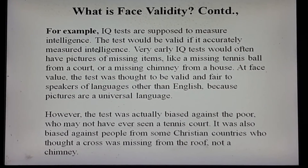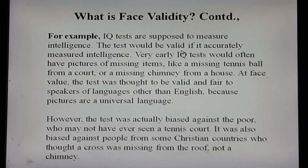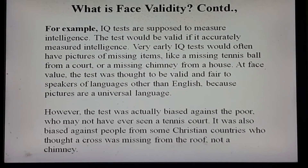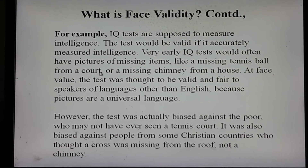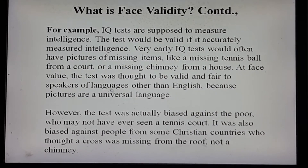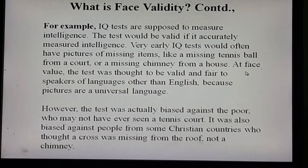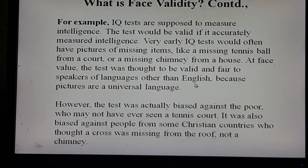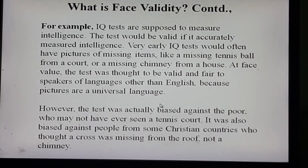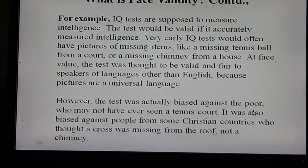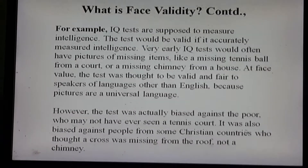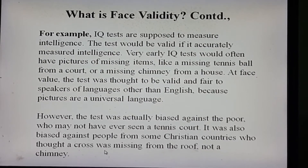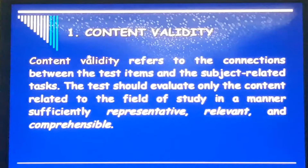For example, IQ tests are supposed to measure intelligence. Very early IQ tests would often have pictures of missing items — like a missing tennis ball from a court or a missing chimney from a house. At face value the test was thought to be valid and fair to speakers of languages other than English because pictures are a universal language. However, the test was actually biased against the poor who may never have seen a tennis court, and also biased against people from some Christian countries who thought a cross was missing from the roof, not a chimney.